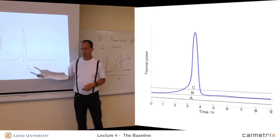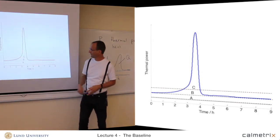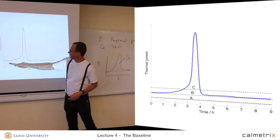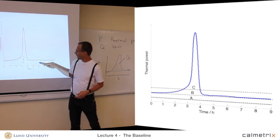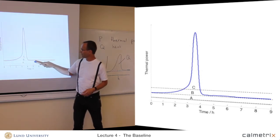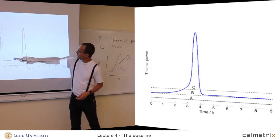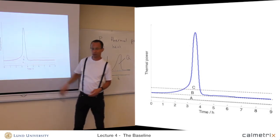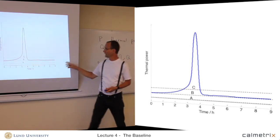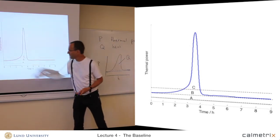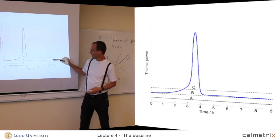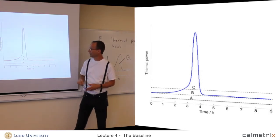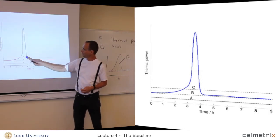Here, B is obviously the correct baseline. If I used A as the baseline and integrated, I would get far too much heat. If I used C, I would only integrate part of the peak and get too little heat. So B is clearly the correct baseline, and you must integrate above that baseline to get the true heat of the reaction.